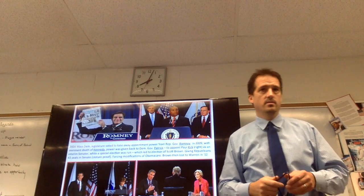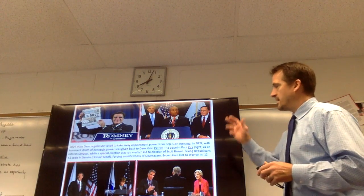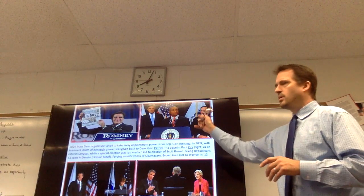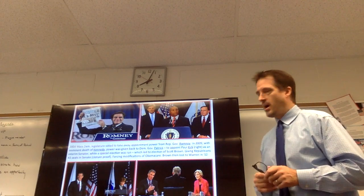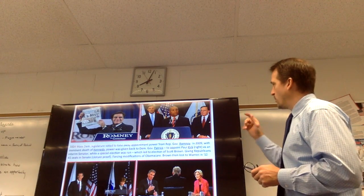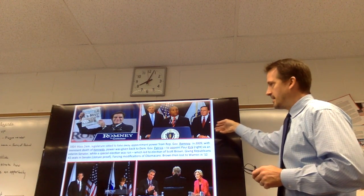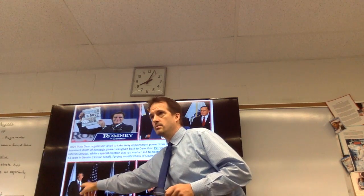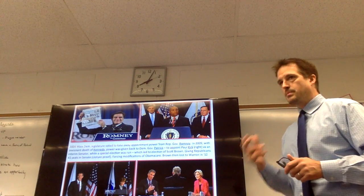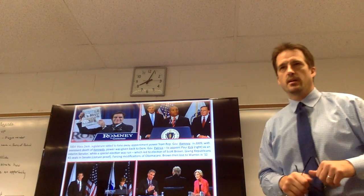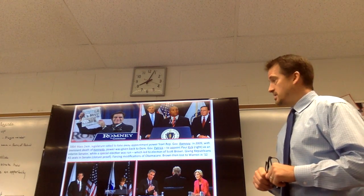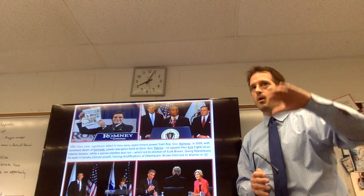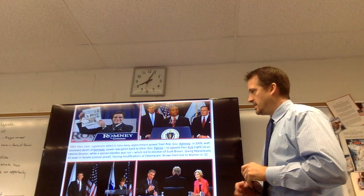The temporary appointment was Paul Kirk, who was connected to the Kennedy family. Then came the special election: Scott Brown ran as a Republican against Martha Coakley, the State Attorney General whom everyone expected to win. In the end, Scott Brown won in a surprise upset victory, fueled in part by the Tea Party conservative movement.